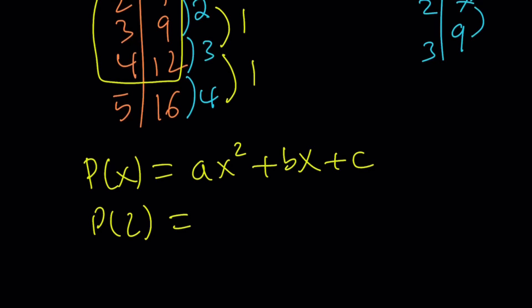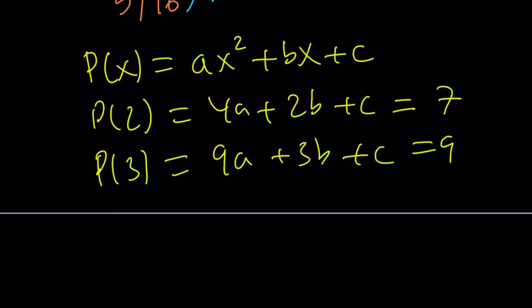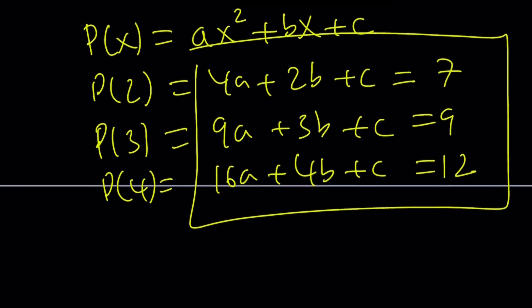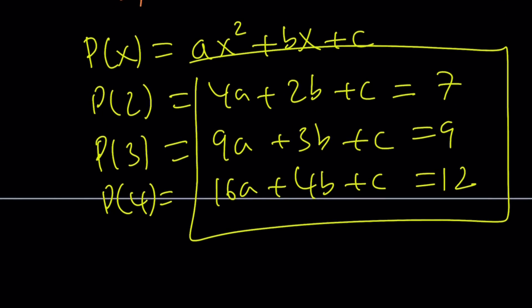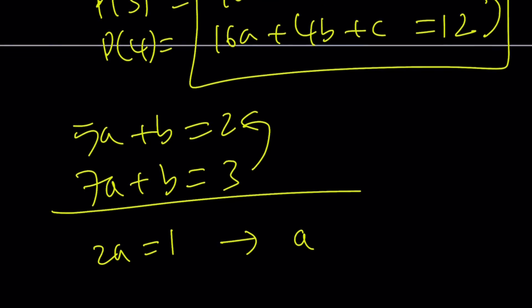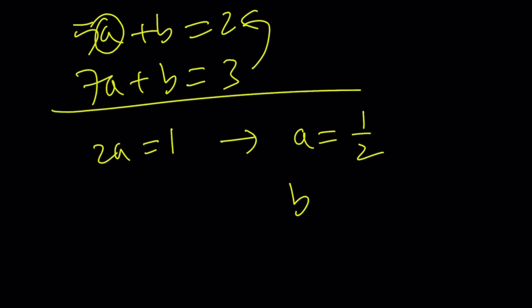P of 2 is going to be 4a plus 2b plus c equals 7. P of 3 is going to be 9a plus 3b plus c equals 9. And finally, P of 4 equals 16a plus 4b plus c, and that's equal to 12. Awesome. Now, we've got a system of equations. You can easily solve this. It shouldn't take too long. But think about it. c is going to cancel out. If you subtract this way, c is going to cancel out. You're going to end up with 5a plus b equals 2. If you subtract this way, c cancels out. You're going to end up with 7a plus b is equal to 3. And then from here, if you subtract this way, b is going to cancel out, and you're going to end up with 2a equals 1, which implies a equals 1 half. And if you plug in 1 half, you're going to get negative 1 half, and that's the value of b.